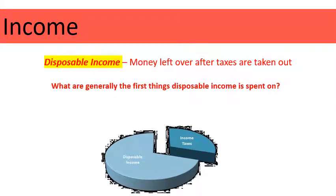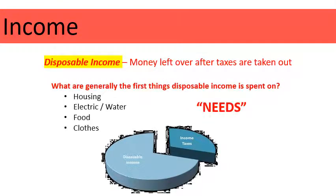I want to introduce two very similar terms that students often get mixed up, so review these carefully. The first is disposable income. Disposable income means the money left over after taxes are taken out. You may have heard the saying that the only things guaranteed in life are death and taxes — you're always going to have taxes taken out of your paycheck. This is the money that you have to dispose of, or to spend, after those taxes are taken out.